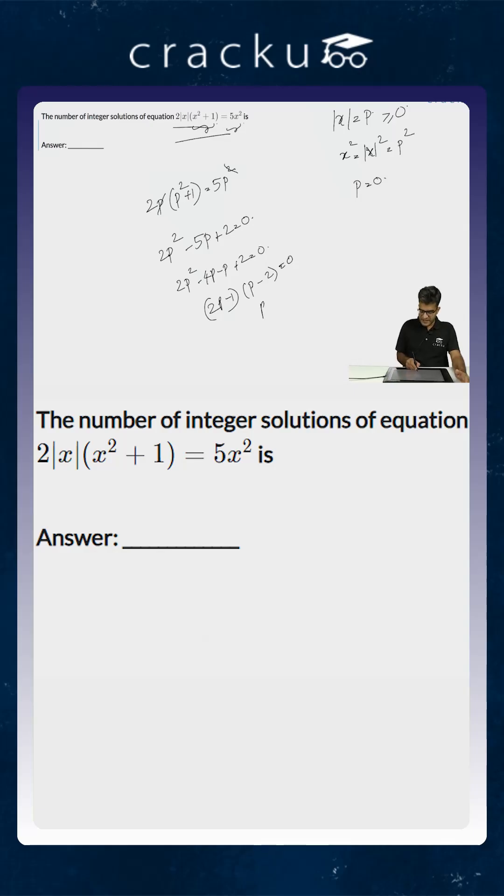So the value of p is either equal to 1 by 2 or it is equal to 2. But what is p? p is equal to modulus of x. So the value of x is either equal to plus or minus 1 by 2, or the value of x is equal to plus or minus 2, or if p is equal to 0 the value of x is equal to 0.